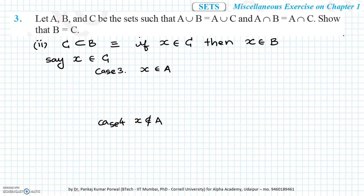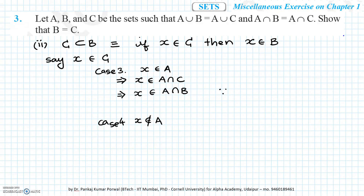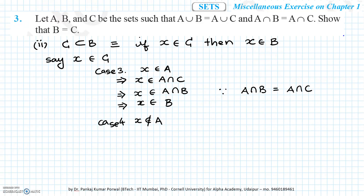In Case 3, X belongs to C and X belongs to A, so we can conclude X belongs to A intersection C. Then, since A intersection B equals A intersection C, we conclude X belongs to A intersection B. From this, we conclude X belongs to B, because if it belongs to A intersection B, it must be in both A and B.